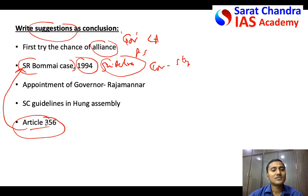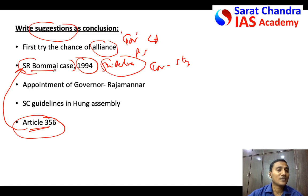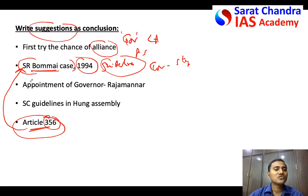Regarding Article 356 also, in the SR Bommai case the Supreme Court clearly mentioned that if Article 356 has been implemented by the President without proper constitutional measures, then judicial review can be done and such President's Rule can be made void by the Supreme Court. The SR Bommai case gave guidelines for the conditions under which Article 356 can be applied, making it the most important case regarding the Governor's power to dissolve the assembly or declare emergency.